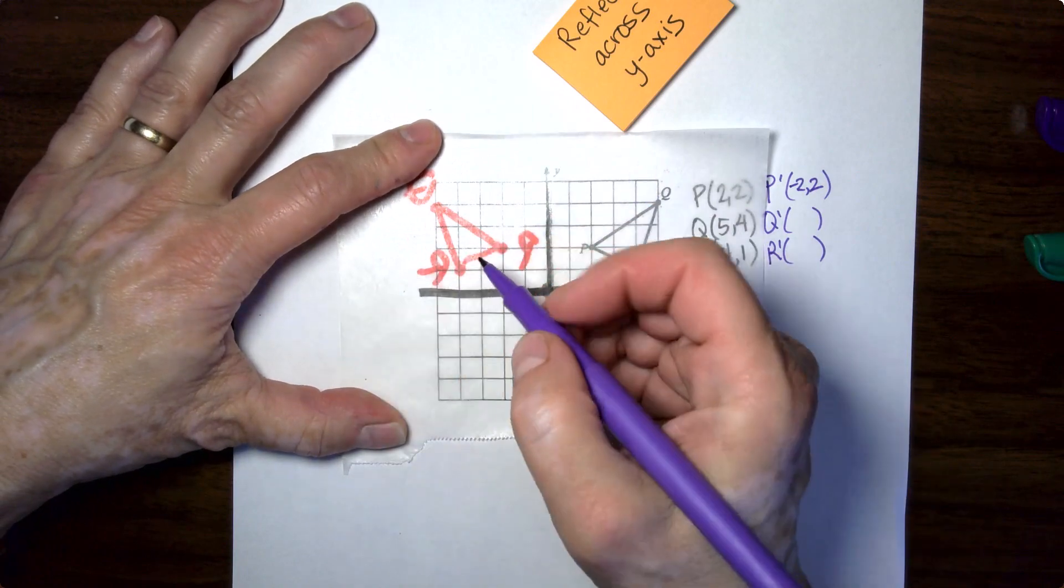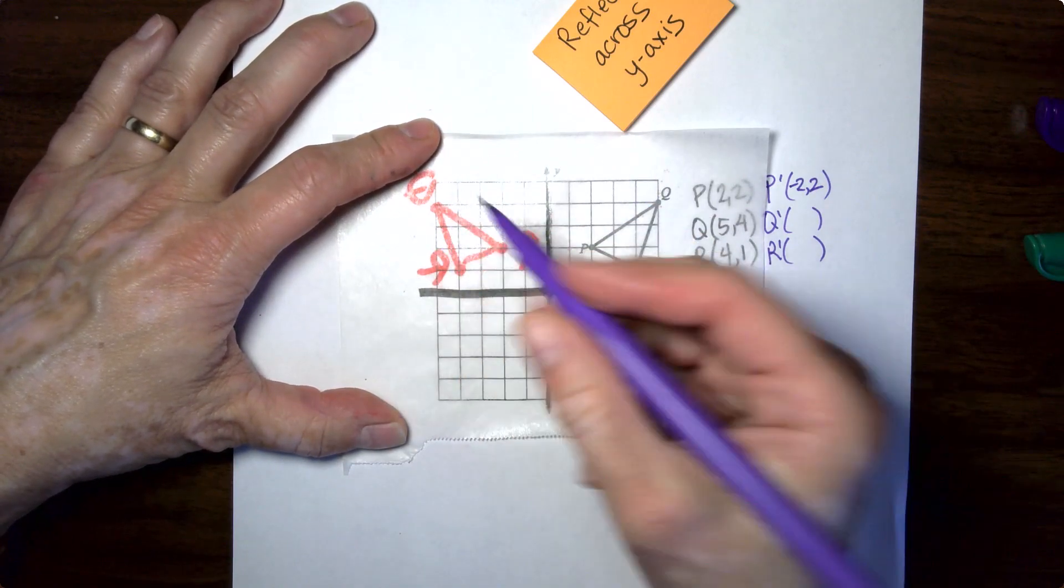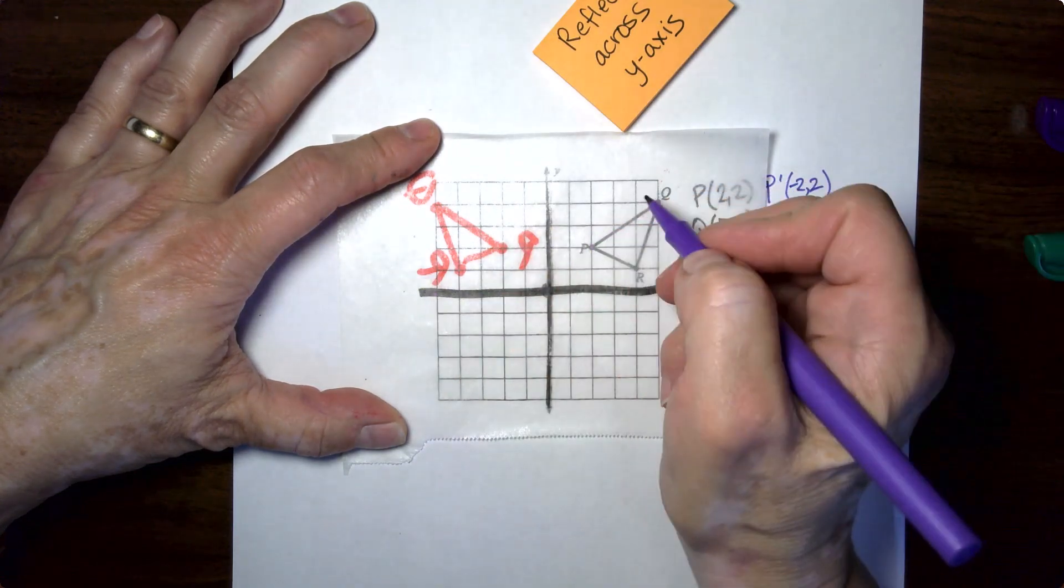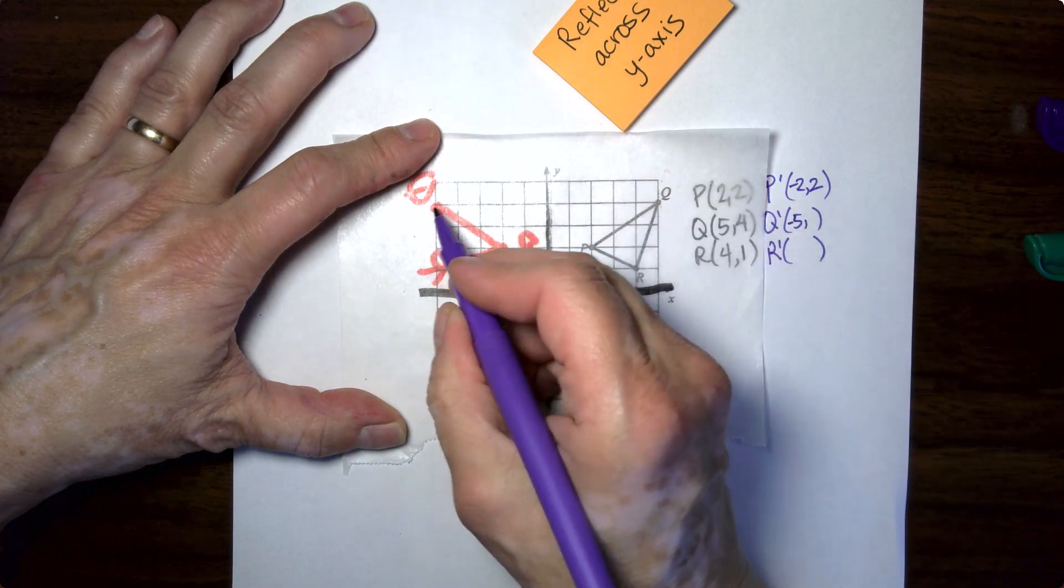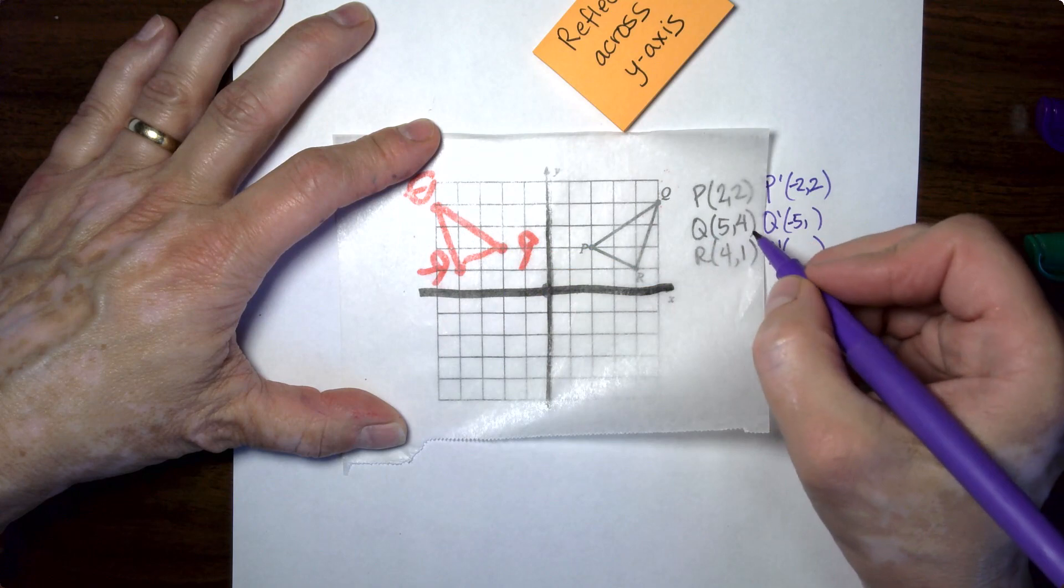Our new Q is one, two, three, four, five. So it's negative five and it should be at the same level as it was before because you just reflected. So that's going to be four.